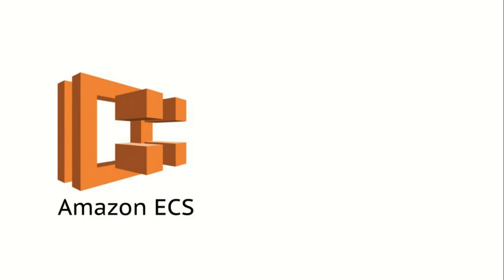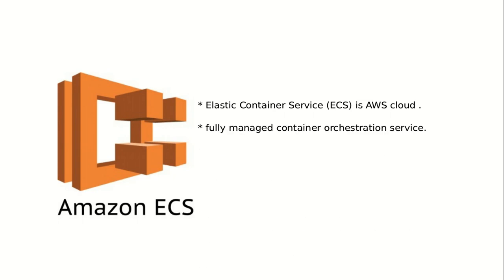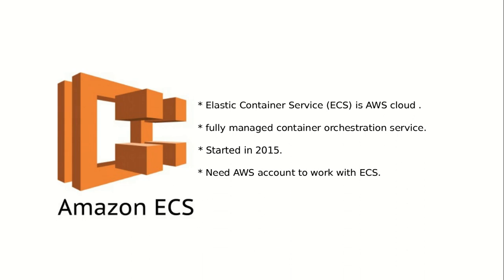The next tool we have is Amazon ECS, which stands for Elastic Container Service. This runs in the AWS cloud, so you will need an AWS account to work with it. It is a fully managed container orchestration service provided by AWS. ECS was started in the year 2015. Unlike Docker and Kubernetes, which are open source, to work with Amazon ECS you will need an AWS account.